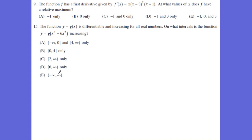Let's go to the other exam with some of our sample problems. Number 9: given this first derivative, we know we have critical numbers at negative 1, 0, and 3. Plugging in values less than negative 1 gives positive values; between negative 1 and 0 we get negative; between 0 and 3 we get positive; and past 3 we still get positives. We want to know where there is a relative maximum — going from positive to negative — which is at negative 1 only.